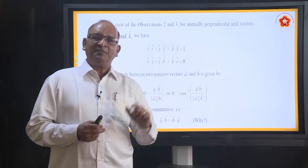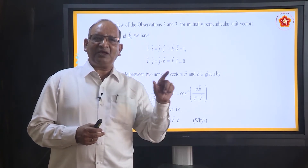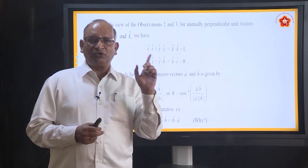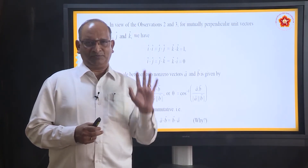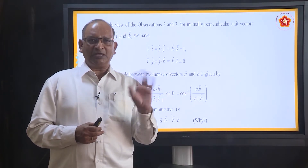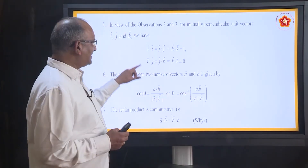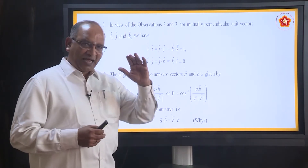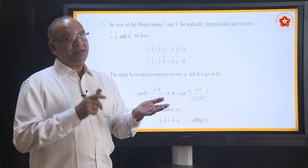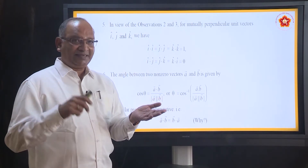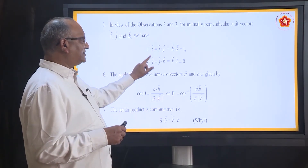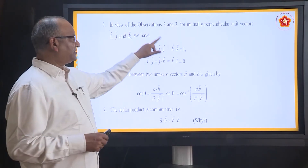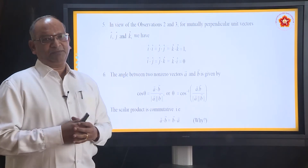Why is I dot I equal to 1? Because A dot B is AB cos theta. What is the modulus of I? Magnitude is 1. So 1 into 1 into cos 0 — because both are I — gives 1. So I dot I is 1, J dot J is 1, K dot K is 1. What about I dot J? The angle between them is 90, cos 90 is 0. So I dot J, J dot K, or K dot I is 0. This is also a very important result while doing problems.